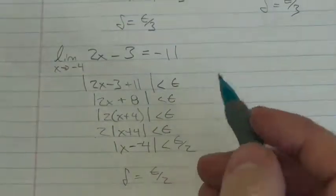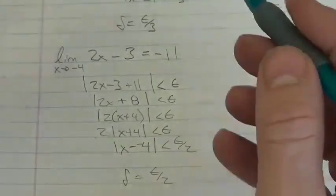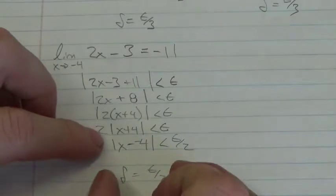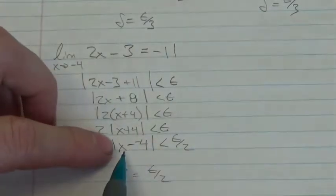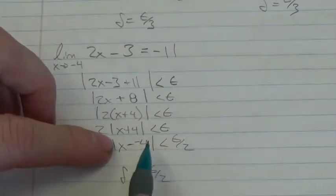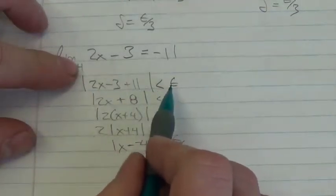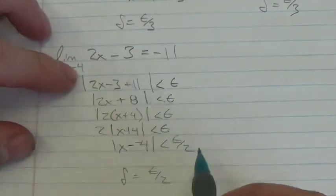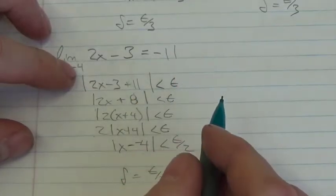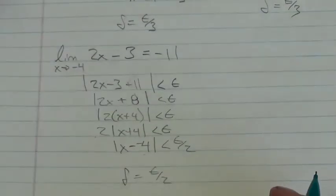Once we identify some epsilon for this particular function, that implies the existence of a delta. As long as the X value I choose is less than epsilon over 2 away from my target value, the function will be less than epsilon away from the limit. Because I can make epsilon as small as I want, I can get as close as I want to that particular value.